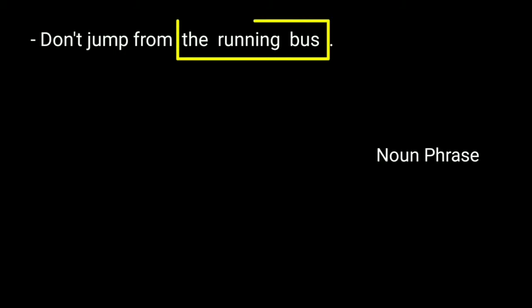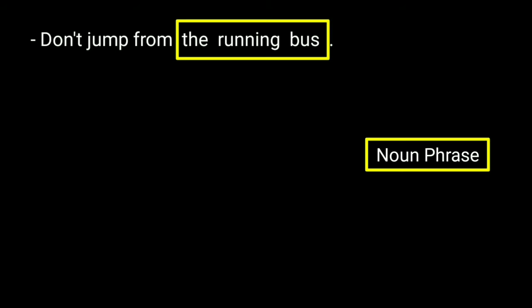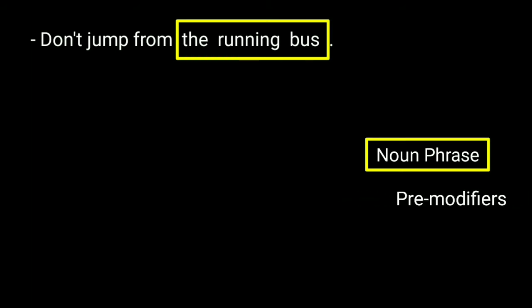Don't jump from the running bus. 'The running bus' is a noun phrase with head noun 'bus'. 'The' (article) and 'running' (participial pre-modifier) are the two pre-modifiers. Here is a table cloth. 'A table cloth' is a noun phrase. 'A' is an article and 'table' is a noun used as a pre-modifier (classifier).